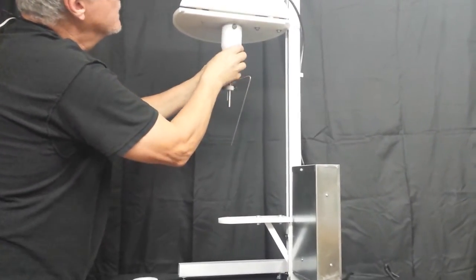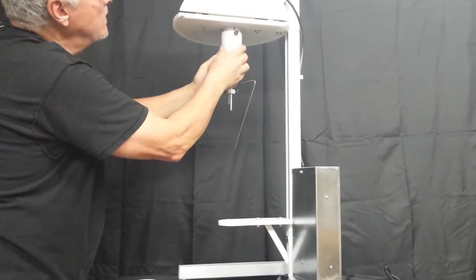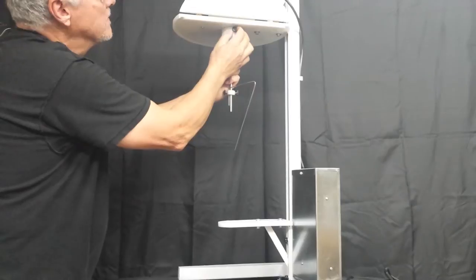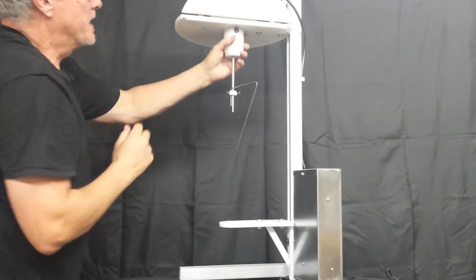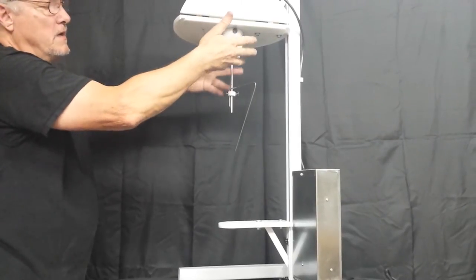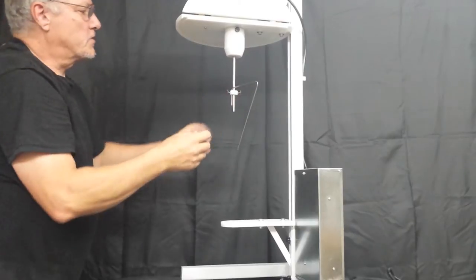Line this up with this hole. Snug that down. That's a cover plate there to stop all the dust. All your product, the dust from your parts from coming up into the chuck there.